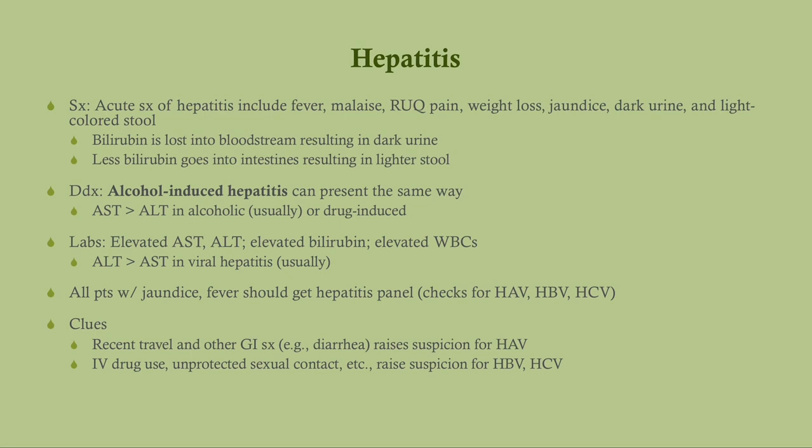Acute symptoms of hepatitis — primarily thinking about hep A — include fever, malaise, right upper quadrant pain, weight loss, jaundice, dark urine, and light-colored stools. Think GI symptoms plus jaundice. Dark urine and pale stools occur because bilirubin is getting into the bloodstream instead of the stool. Bilirubin is the precursor to the pigments that make stool brown, so if it's not reaching the stool, stools will be pale.